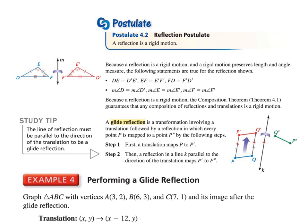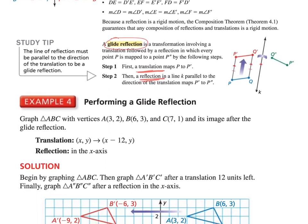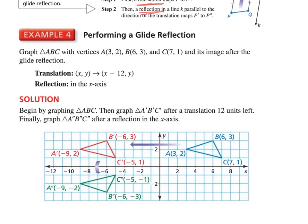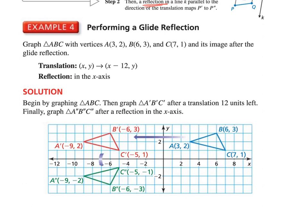Next idea: a reflection is rigid. Rigid means it doesn't change the shape of the image. The next concept is a glide reflection. A glide reflection means that you're first translating and then you're reflecting. Translating means you're just shifting it, and reflecting means you're moving it over to the other side of a line. That's what's happening in example four.